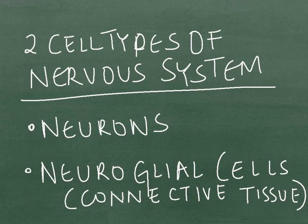The two major cell types of the nervous system are the neurons and neuroglial cells, which are the connective tissue of the nervous system.